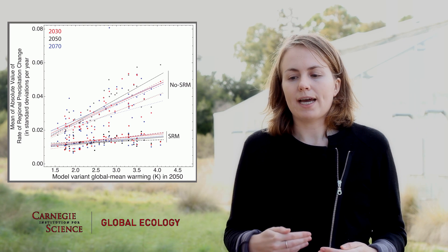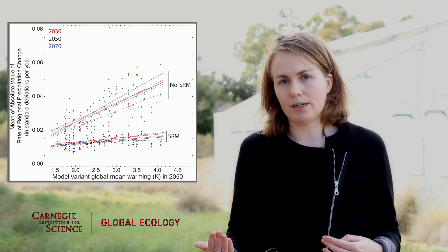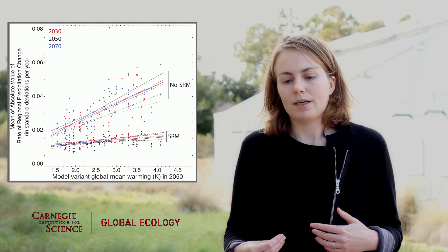But we found that relative to a no SRM alternative, it actually worked better, SRM, in the high climate sensitivity models than the low sensitivity models. Basically the regional rates of precipitation change after applying SRM were more than 50% lower on average than in the simulations where there is no climate engineering.